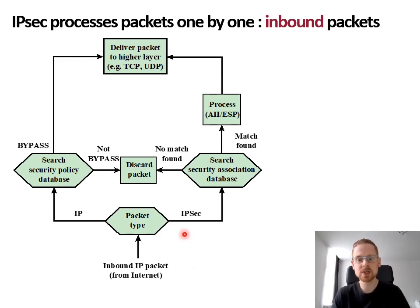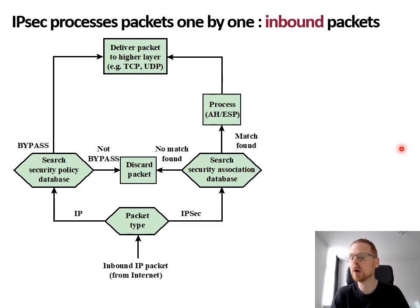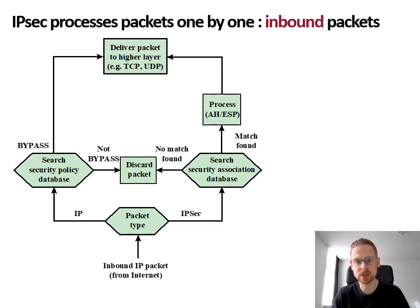If it is an IPsec packet, the security association database is searched. If no match is found, it means that the sending host never negotiated a security association, so no keys have been exchanged. This means the packet cannot be decrypted or authenticated, so the packet is discarded. If a match is found, the packet can be decrypted and authenticated using either AH or ESP, and then the payload can, after decryption, be delivered to the higher network layers.